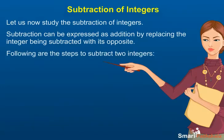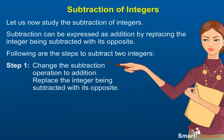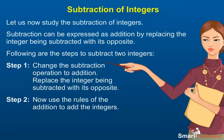Following are the steps to subtract two integers. Step 1: Change the subtraction operation to addition. Replace the integer being subtracted with its opposite. Step 2: Now use the rules of addition to add the integers.